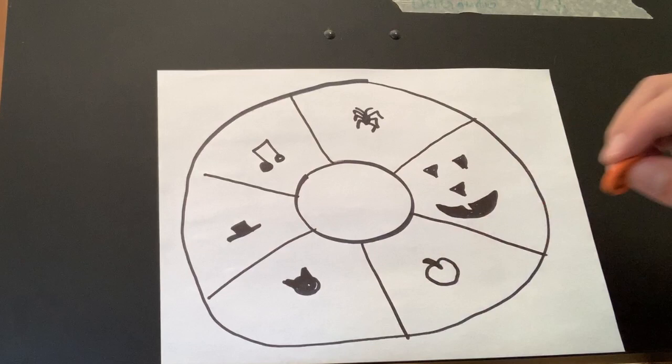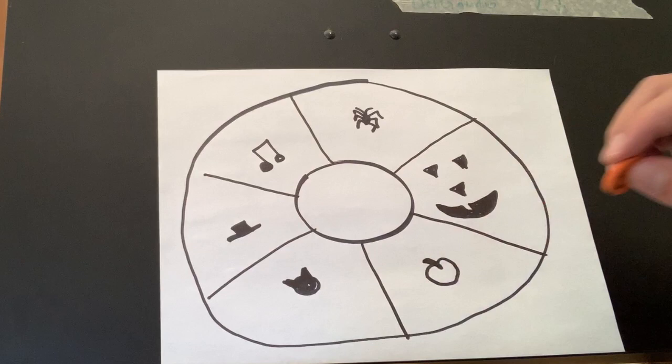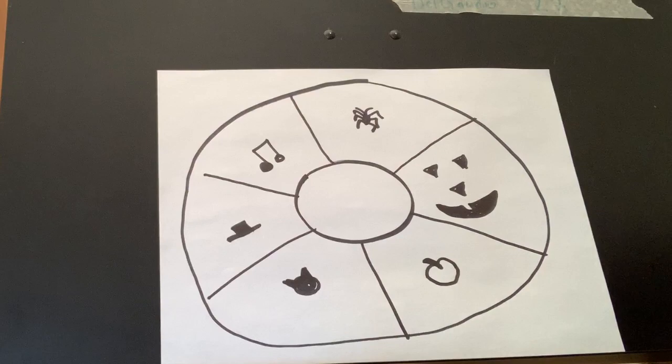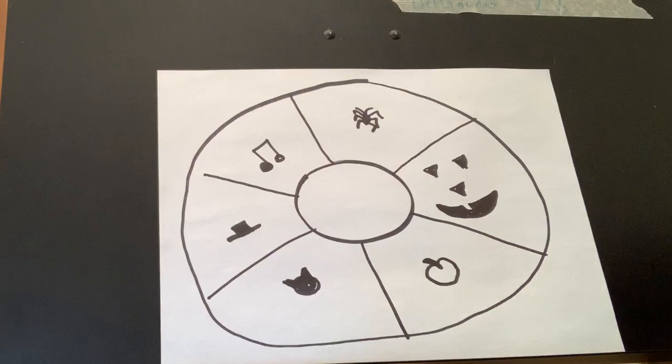Now, if there is someone else you want to play with, you could give them the marker and let it be their turn. But, since it's just me today, I'll play again. I think this time I'll start on the cat. Here I go.